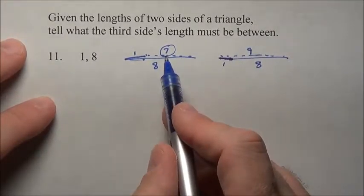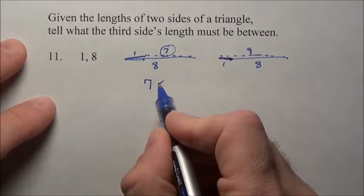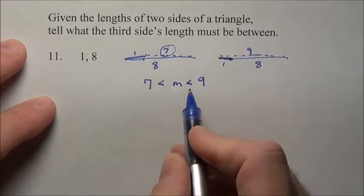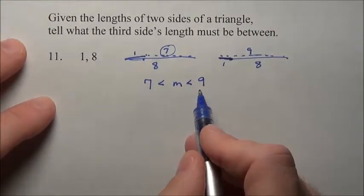So the largest would be 7, excuse me, the largest would be 9, the smallest would be 7. So our measurement is somewhere between 7 and 9. See I use M for measurement. It's somewhere between 7 and 9. Can't equal 7, can't equal 9.